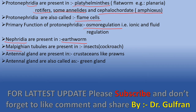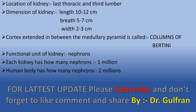Nephridia are present in earthworms. Malpighian tubules are present in insects, for example cockroach. The antennal glands are present in crustaceans like prawns, and antennal glands are also called green glands. The location of the kidney is between the last thoracic vertebra and the third lumbar vertebra.